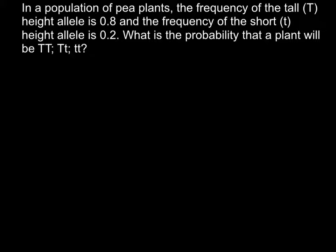Hi, today I have another video about population genetics. And today's problem is, in a population of pea plants, the frequency of the tall (capital T) height allele is 0.8, and the frequency of the short (small t) height allele is 0.2.